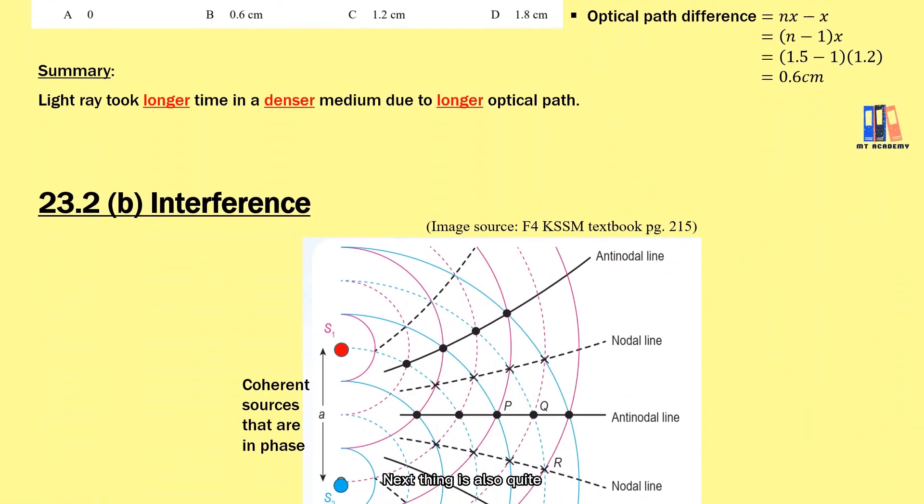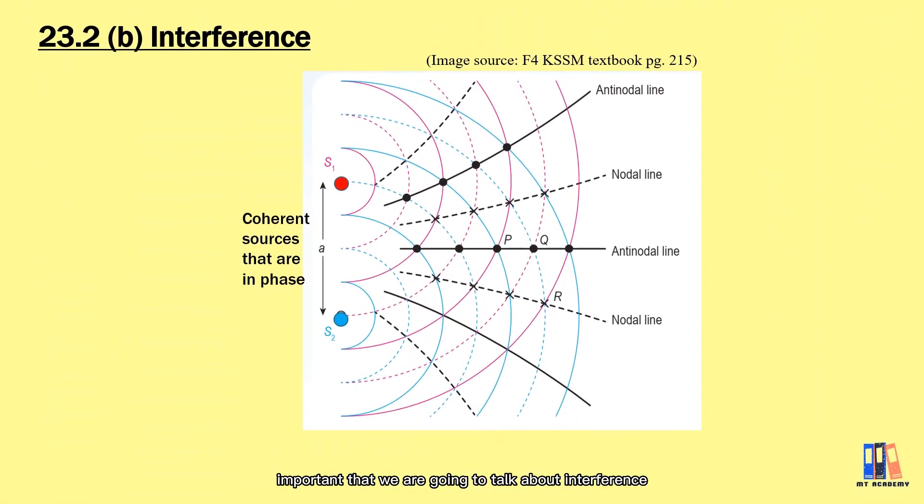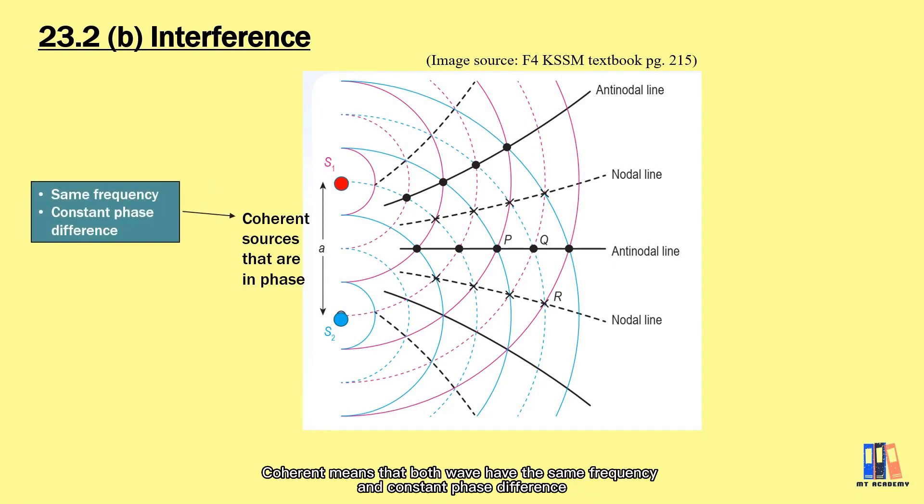Next, we're going to talk about interference. You should feel familiar on how to sketch the interference of waves from two coherent sources. Coherent means both waves have the same frequency and constant phase difference. This is the important criteria for having the interference pattern, like the criteria for standing waves or beats in the last few chapters.